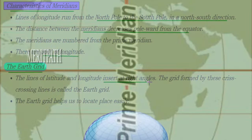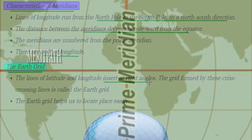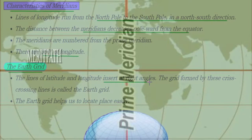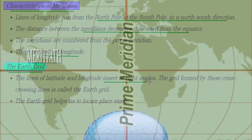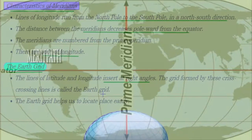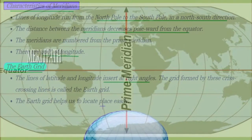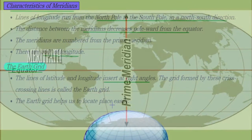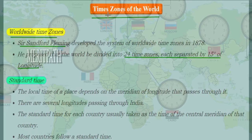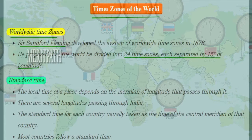The lines of latitudes and longitudes meet at one point, intersecting at right angles — that is, 90 degrees — forming a rectangular-shaped grid. This crisscrossing network is known as the Earth Grid, and it helps us locate places easily. At every point where latitude and longitude meet, they form a right angle.